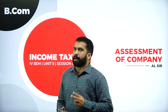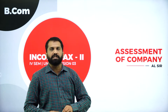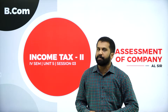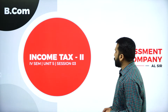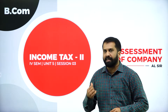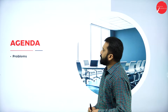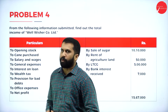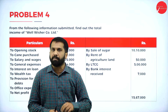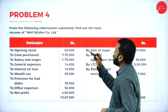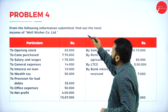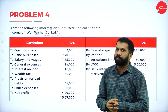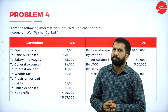In the previous two sessions, we completed what is a company and the essential features of a company. We also worked out 2 to 3 problems on assessment of company. In today's session, we will work out another 2 problems on this topic. Now, from the following information submitted, find out the total income of Well-Wisher Company Limited.